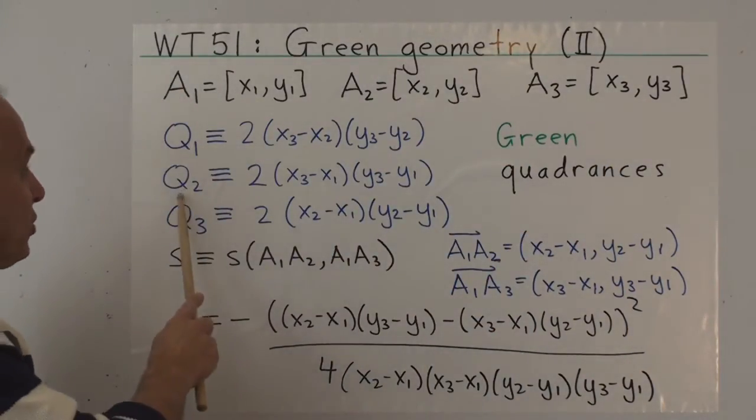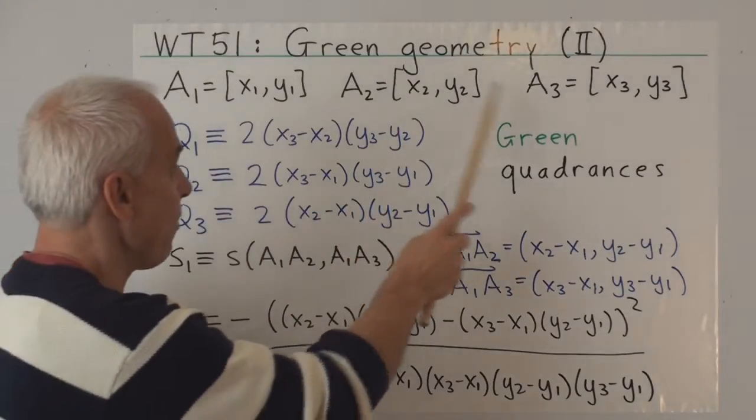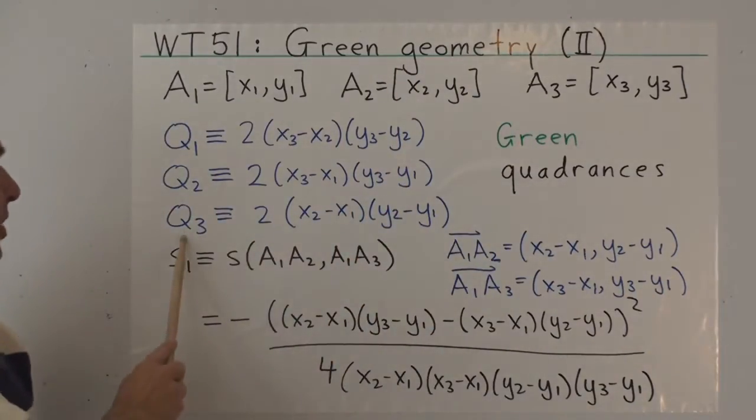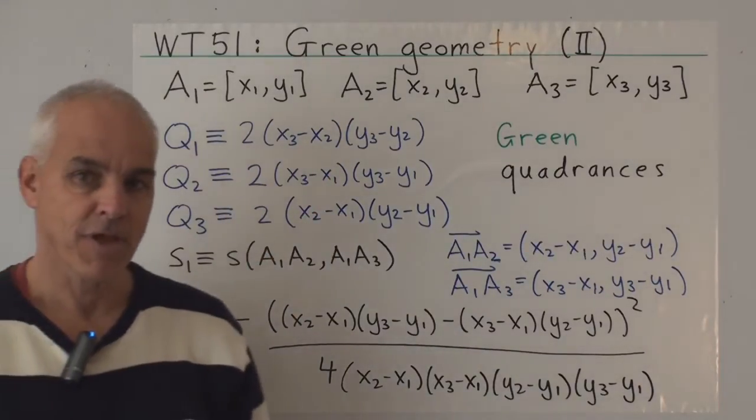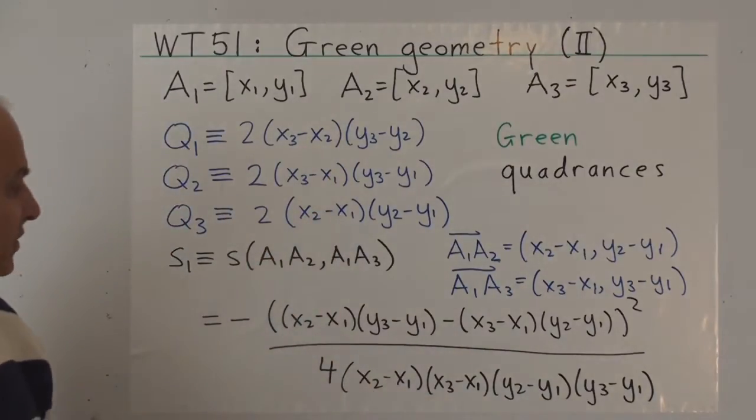And similarly, we have Q2, the green quadrance between A1 and A3, and Q3, the quadrance between A1 and A2. So those are the three quadrances of this triangle.